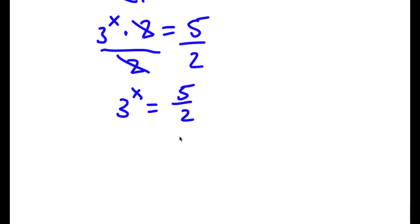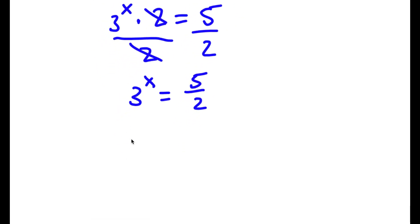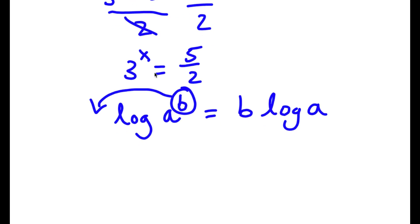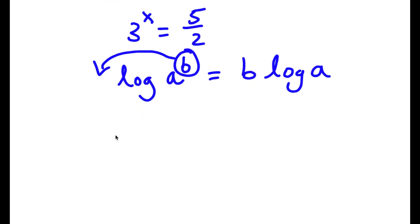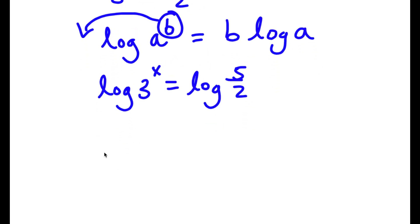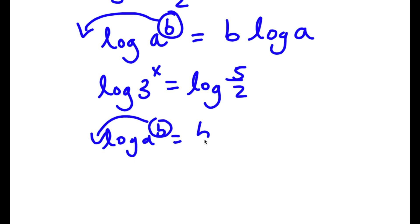Now an important property of logarithms is that if I take the log of a to the power of b, I can move the exponent b to the front of the logarithm. So this would be equal to b times log a. This is known as the power property.